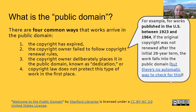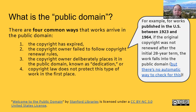The second way something can enter the public domain is that the copyright owner failed to follow copyright renewal laws. There are thought to be millions of works published between January 1, 1923 and 1964 that are now in the public domain because their original copyright owners didn't renew after the initial 28-year term. Unfortunately, there's no easy way to prove that the copyright was not renewed, so it's generally safest to treat works from this period as copyrighted unless you can definitively determine otherwise.